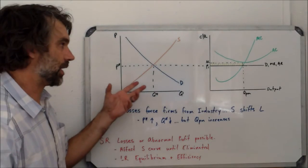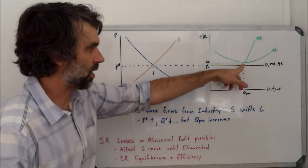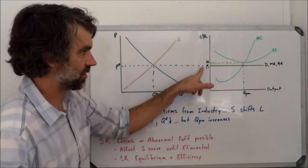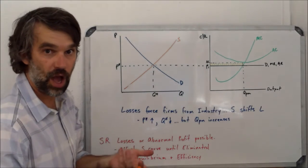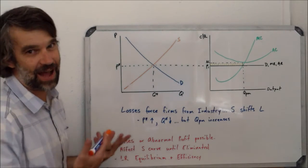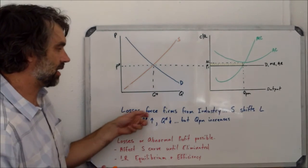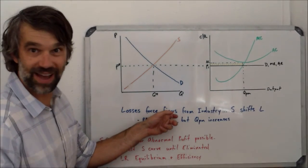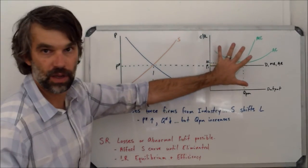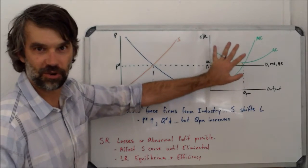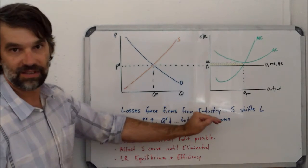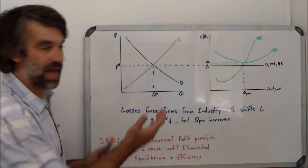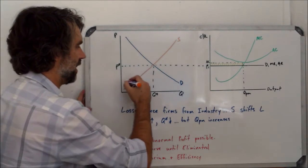In this situation, where the firm is operating at QPM but average costs are higher than average revenue, well, then they're going to be making a loss. So here the exact opposite is true. The loss is going to force some firms, not all of them, remember this is one firm. There would be thousands of firms with the exact same diagram. But some firms are going to leave the industry. The result of that, of course, is supply is going to shift to the left.